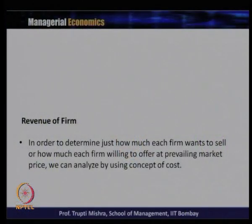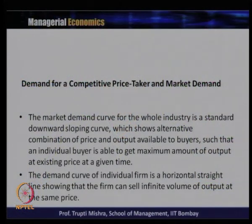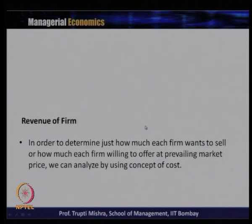To determine how much each firm wants to sell at the prevailing market price, we analyze using the concept of cost. How much the firm is willing to sell can be decided on the basis of the cost function or the prevailing price. Profit is the difference between total revenue and total cost. The point at which profit is maximum is generally where the firm wants to operate — they want to sell that amount of output where they get maximum profit.